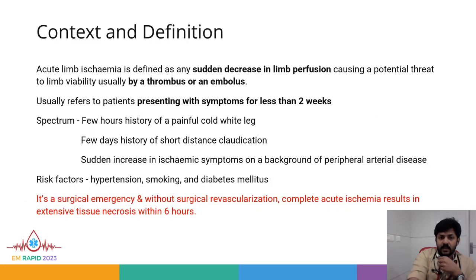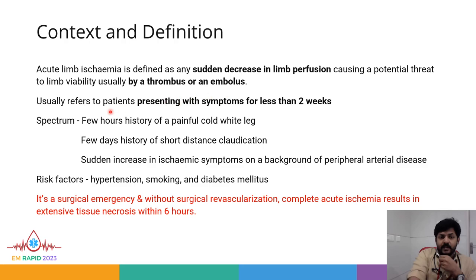Acute limb ischemia is defined as any sudden decrease in limb perfusion causing a potential threat to the viability of the limb, usually caused by a thrombus or an embolus. It usually refers to patients presenting with symptoms for less than two weeks. The spectrum ranges from a few hours history of a painful cold white leg to a few days history of short distance claudication, or a sudden increase in ischemic symptoms on a background of already existing peripheral arterial disease.